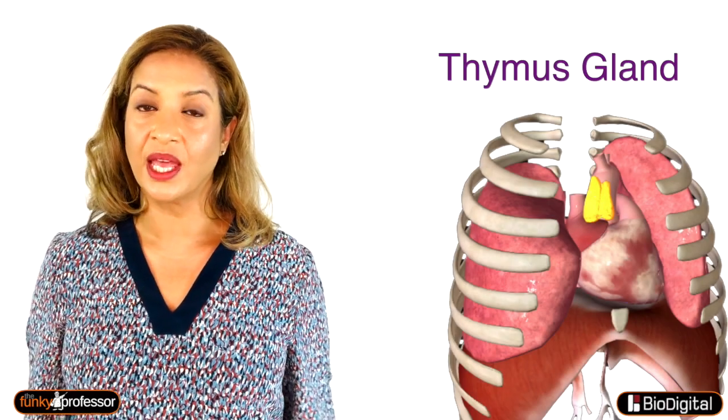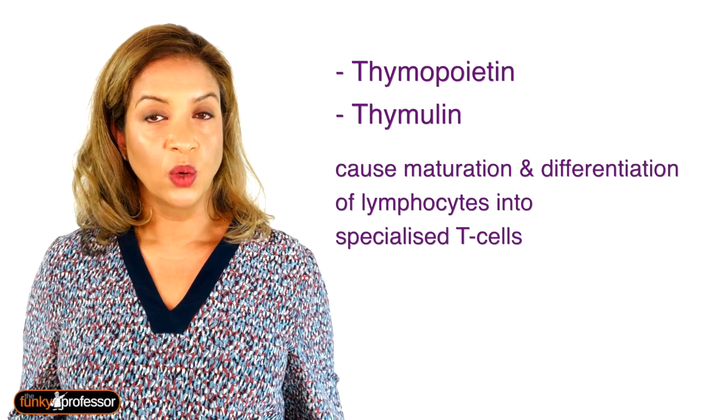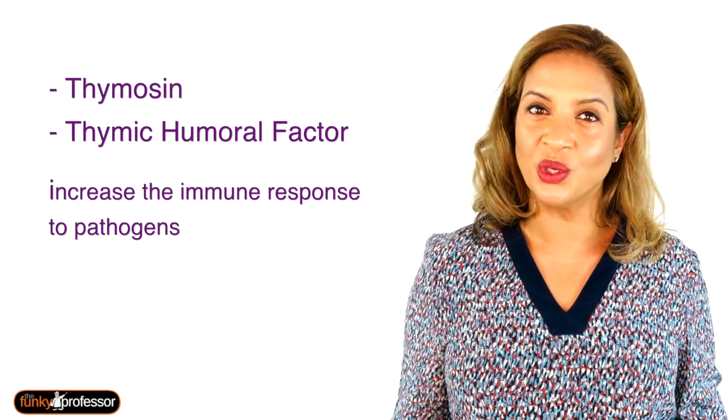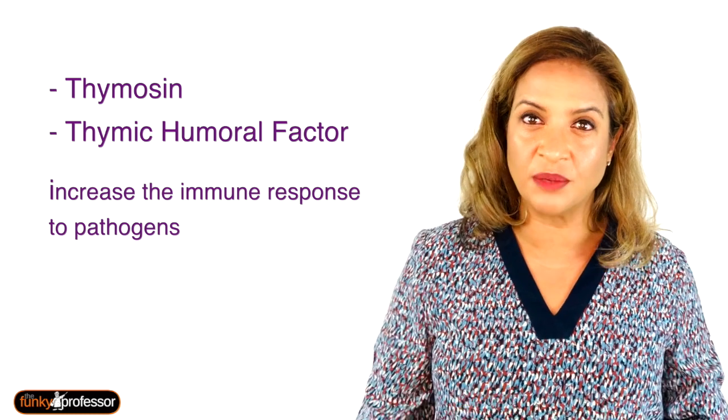Question 2. This was the thymus gland, which is found in the superior mediastinum and can extend into the anterior mediastinum. It is a lymphoid organ and is very active in childhood. White blood cells, also known as lymphocytes or immature T cells that are made in the bone marrow, travel via the bloodstream to the thymus. The thymus gland produces the hormones thymopoietin and thymulin, which cause the maturation and differentiation of these immature lymphocytes into specialised T cells, which once fully formed get distributed around the body in lymph glands. The thymus also produces the hormones thymosin and the thymic humoral factor, which increase the immune response to fight pathogens.